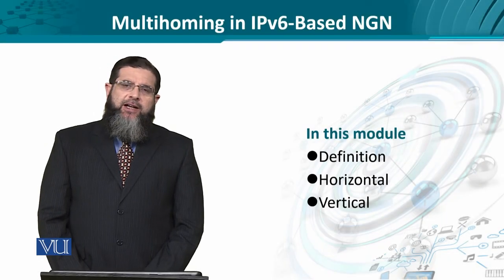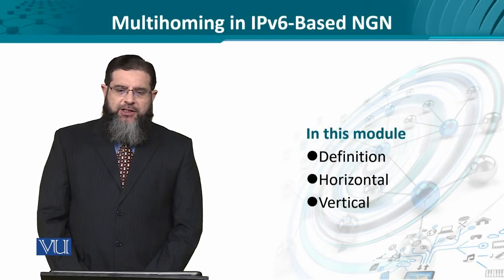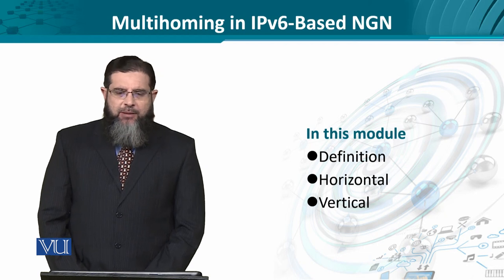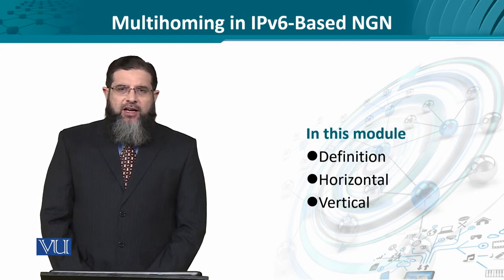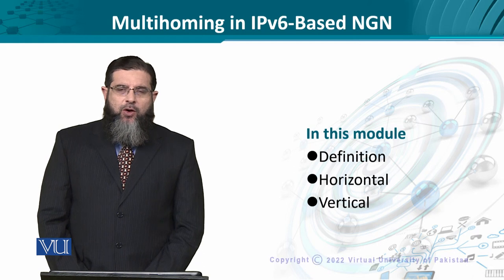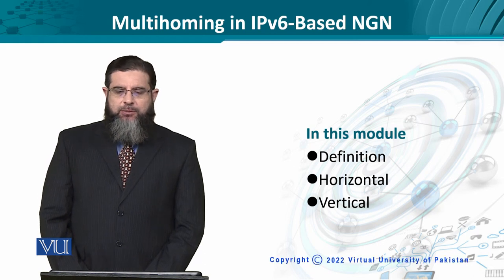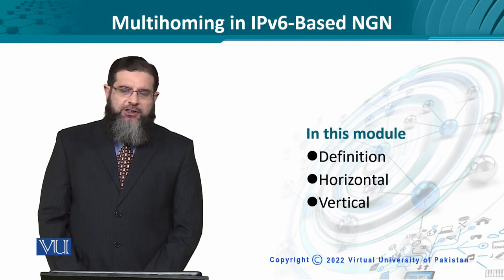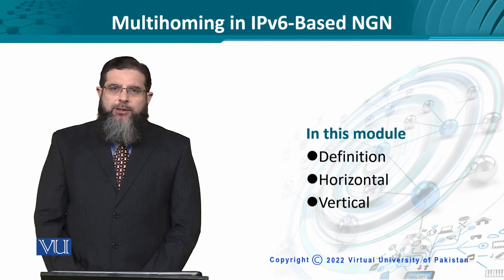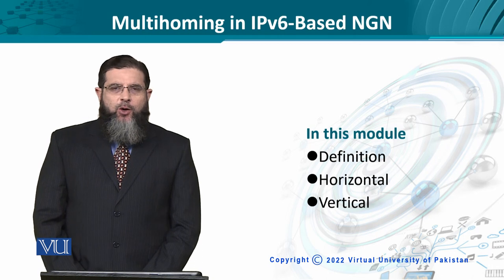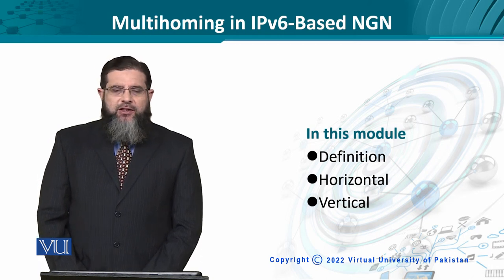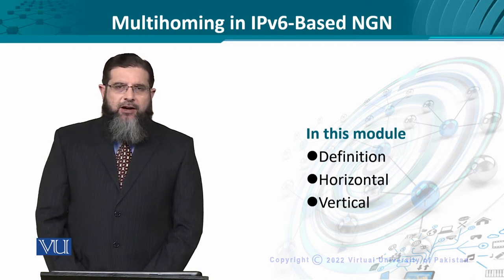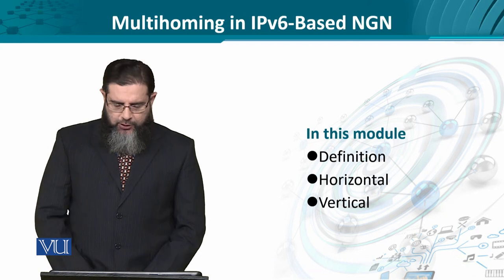Multihoming is a highly desired feature which has been provisioned in IP version 4, in IP version 6, and now for NGN which is based on IP version 6. We are going to explore it and look at the formal definition of multihoming and the horizontal and vertical variants of it.